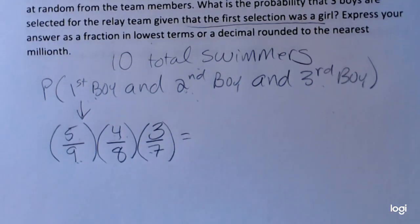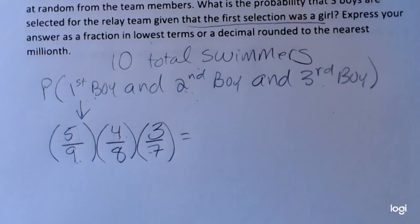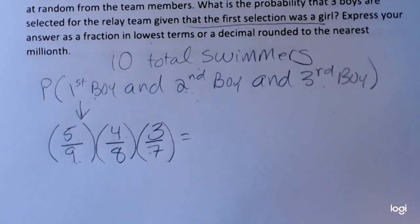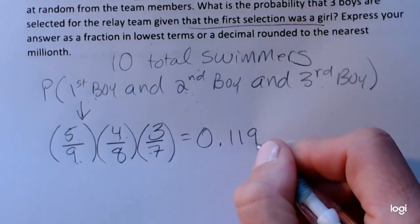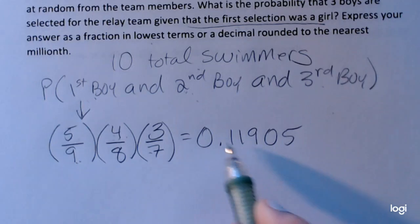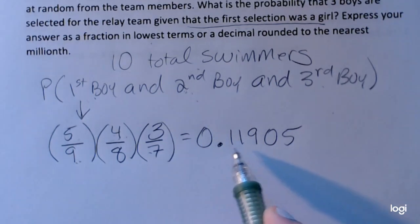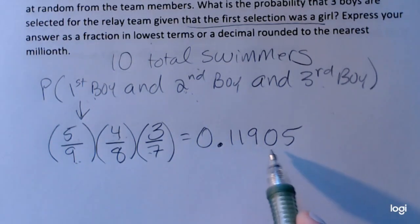So once you get that far, the rest is pretty straightforward. It's going to be 5 times 4 times 3 divided by 9 times 8 times 7. And rounding to 5 decimal places, I'll make it exciting. I get about 0.11905.